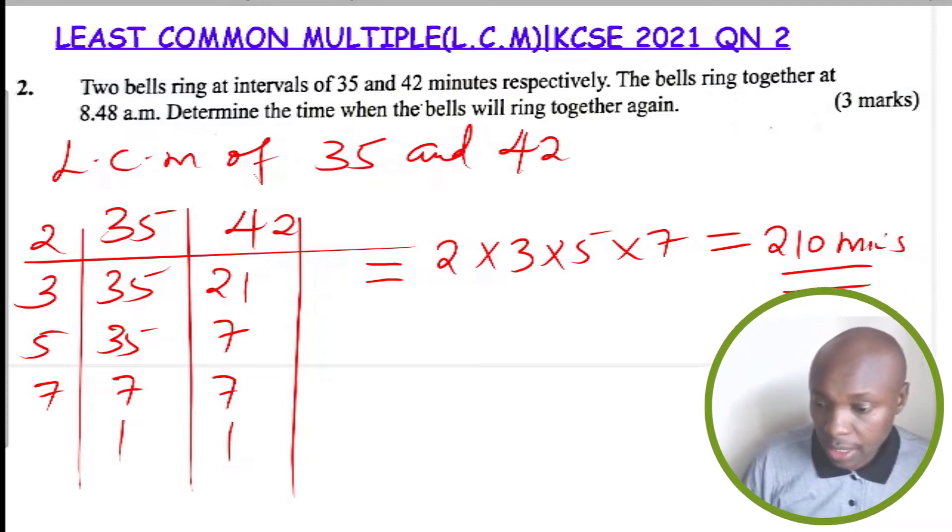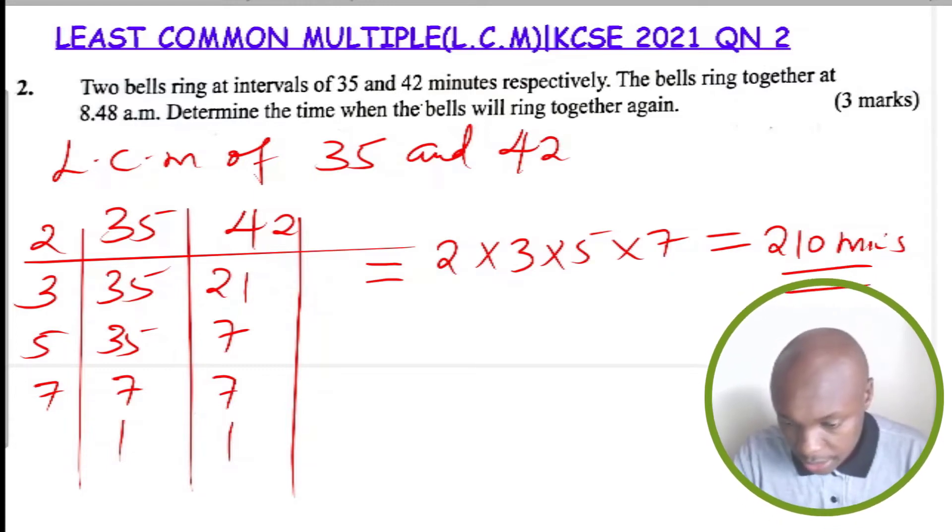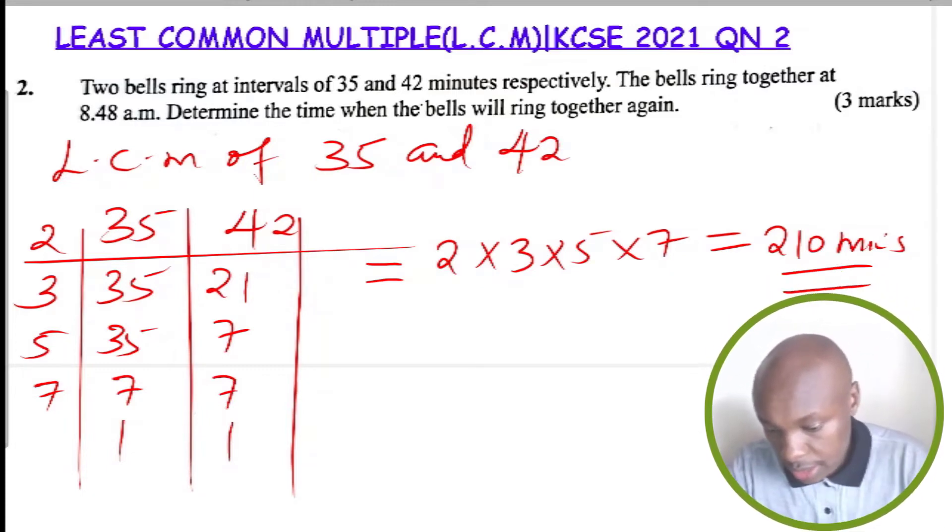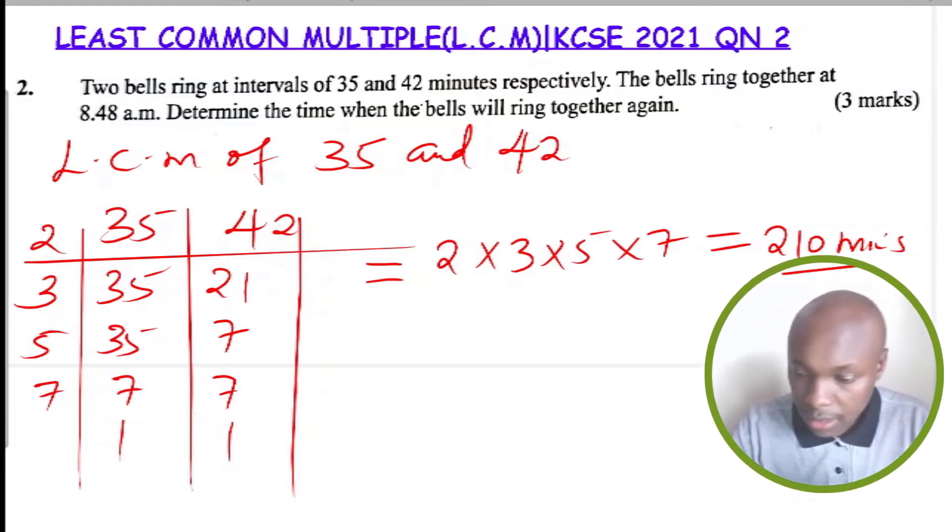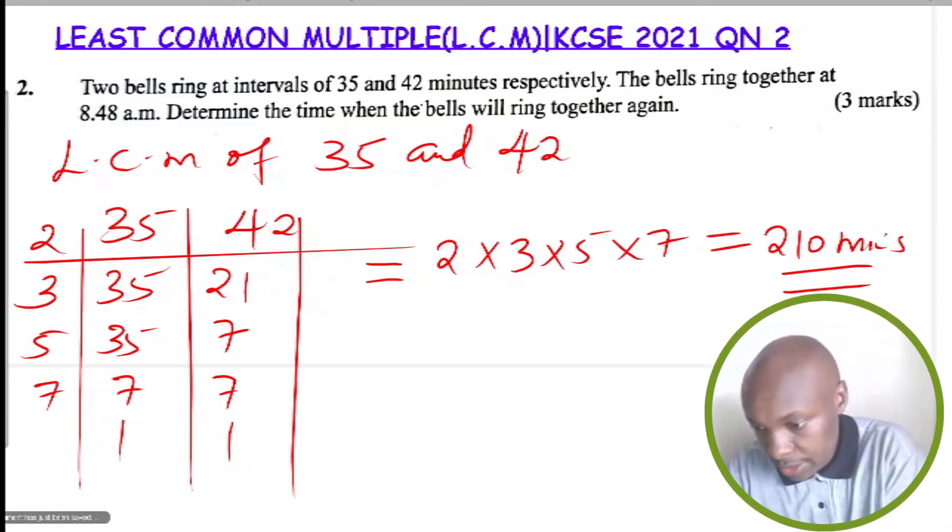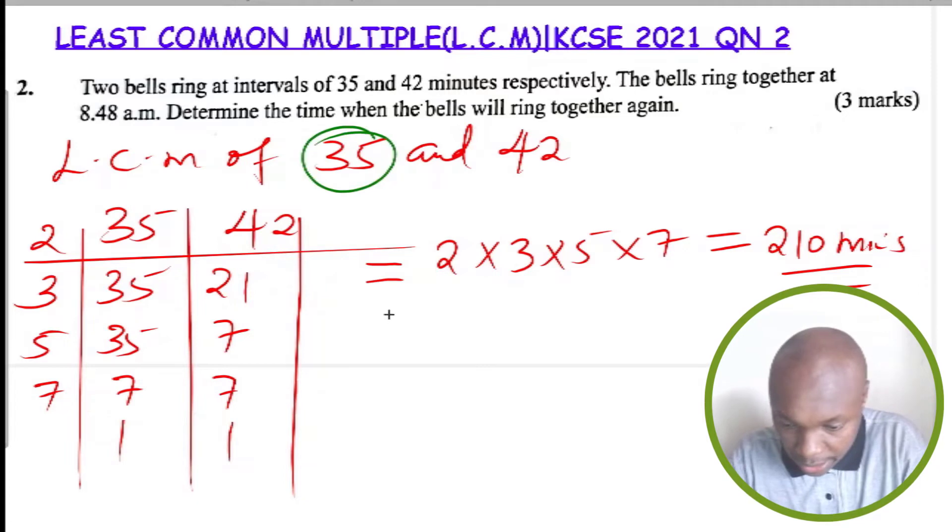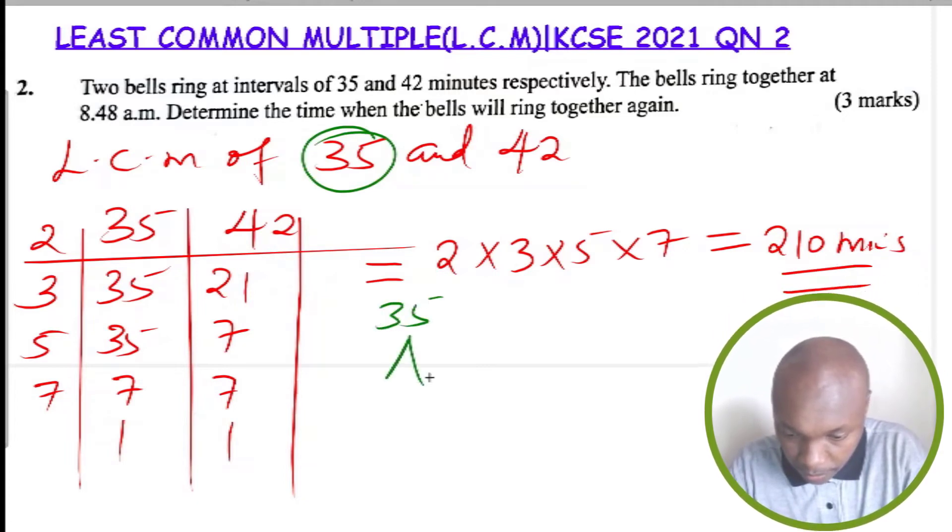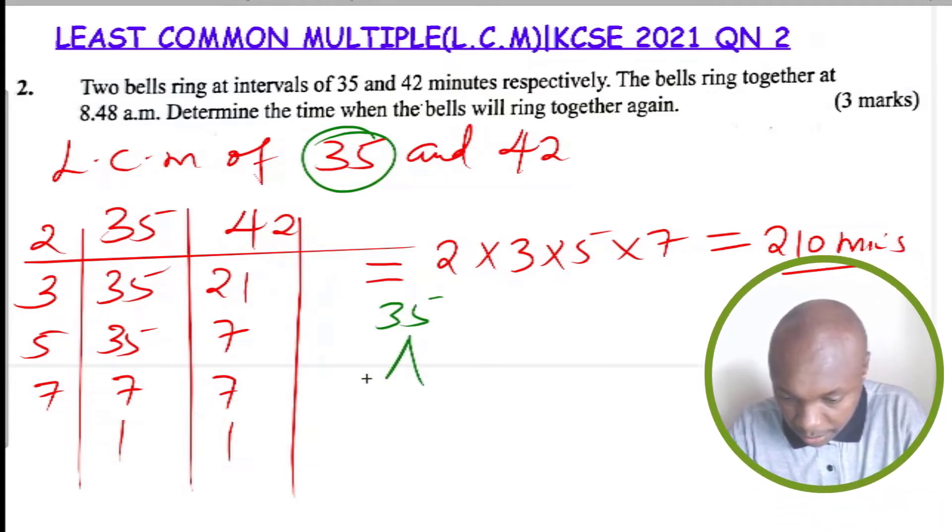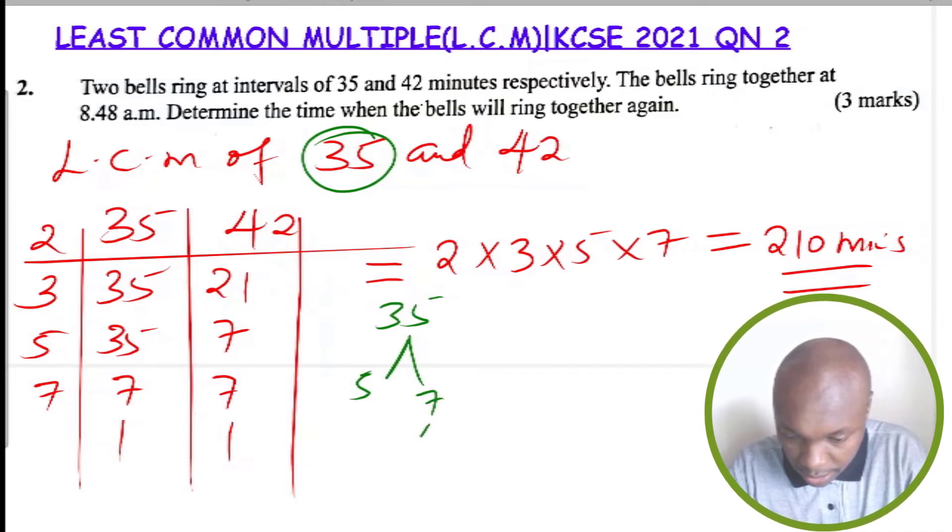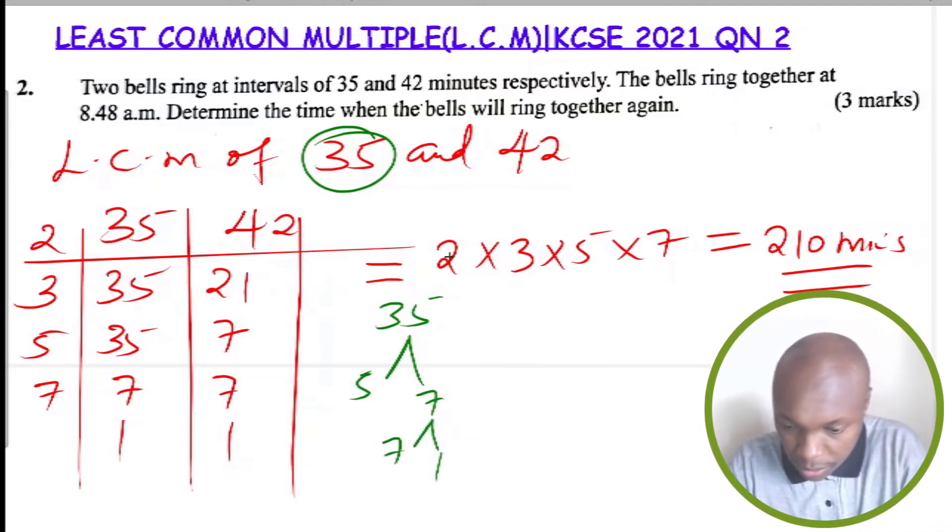There is a second method that you can use, and this is the method of using the factors. The factors method where you get the factors of 35: divide 35 by five, you get seven, then divide seven by seven, you get one. So the factors of 35 are therefore five and seven.